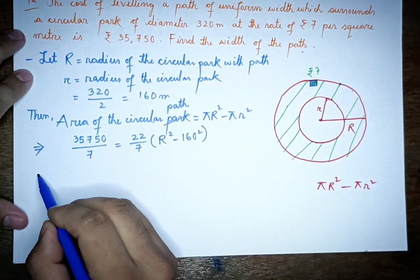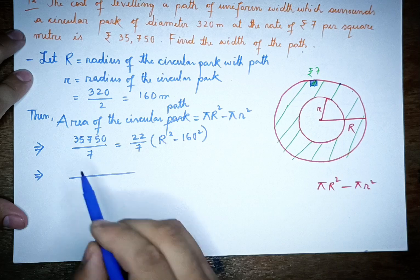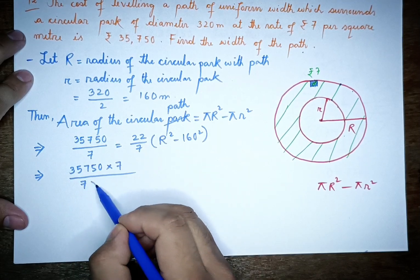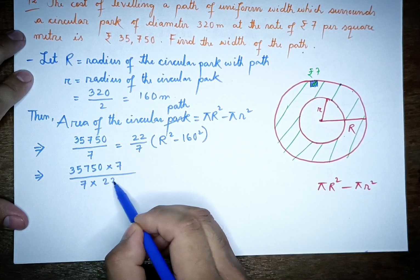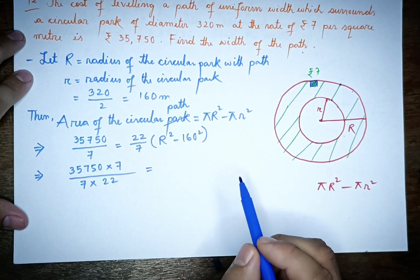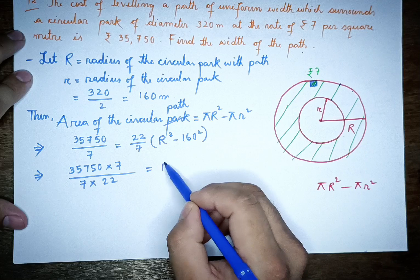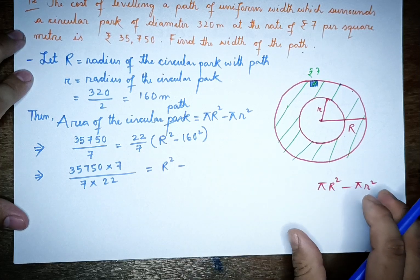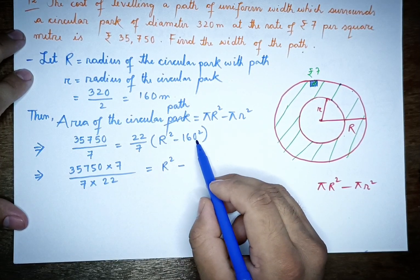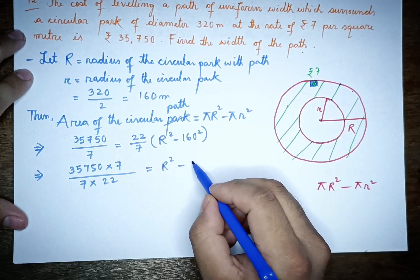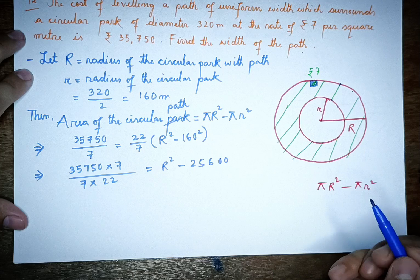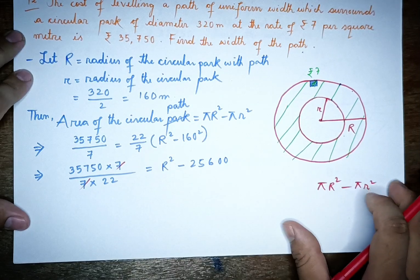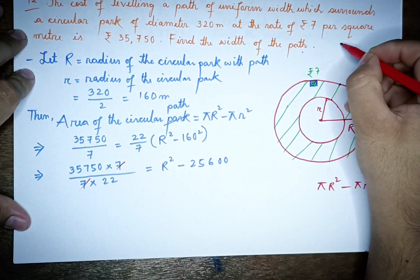Using the formula: 7 × (22/7) × (R² − r²) = 35,750. Here r = 160, so r² = 160² = 25,600. Substituting: 22 × (R² − 25,600) = 35,750.